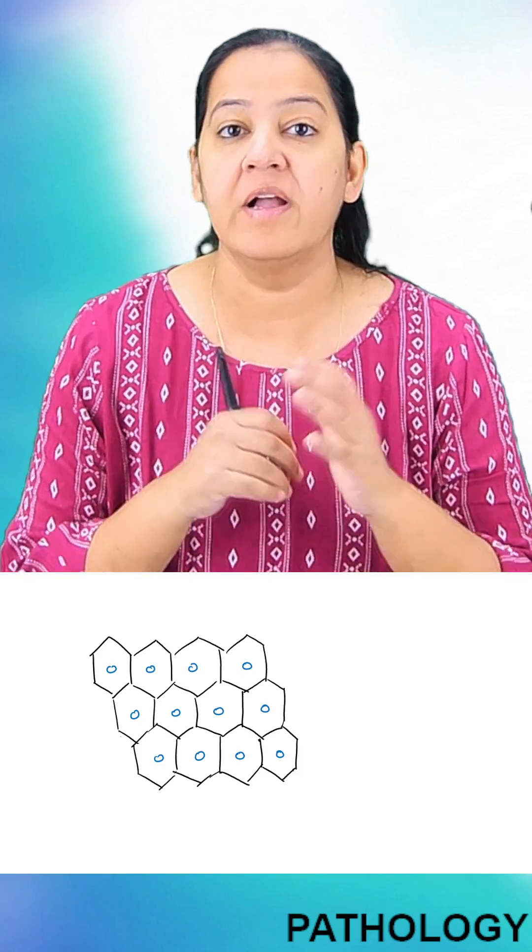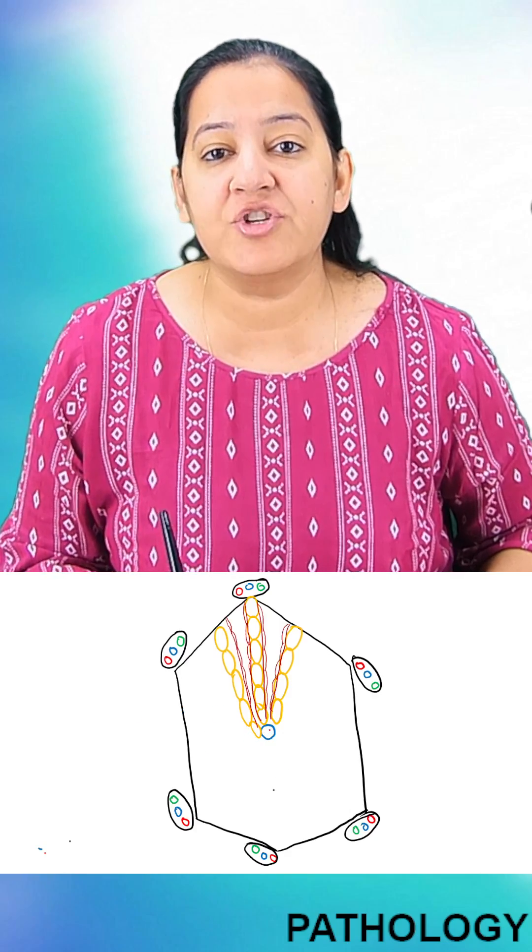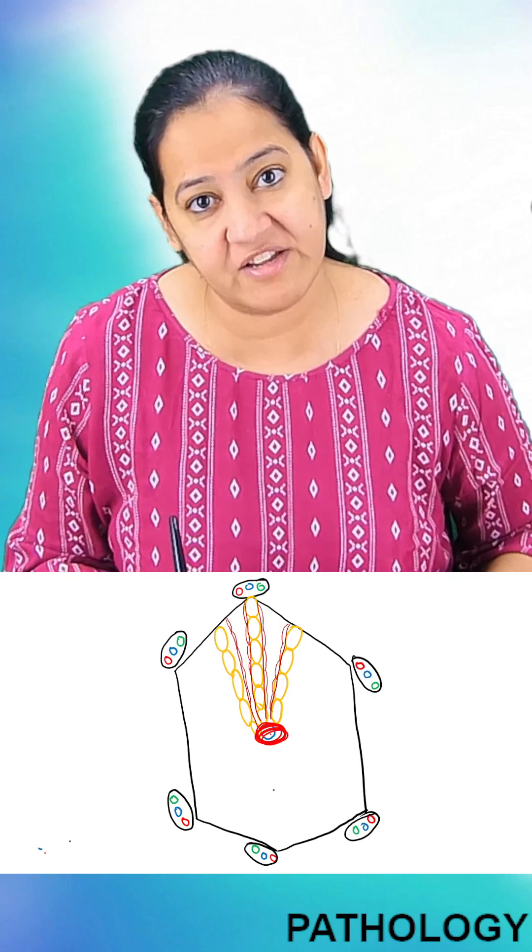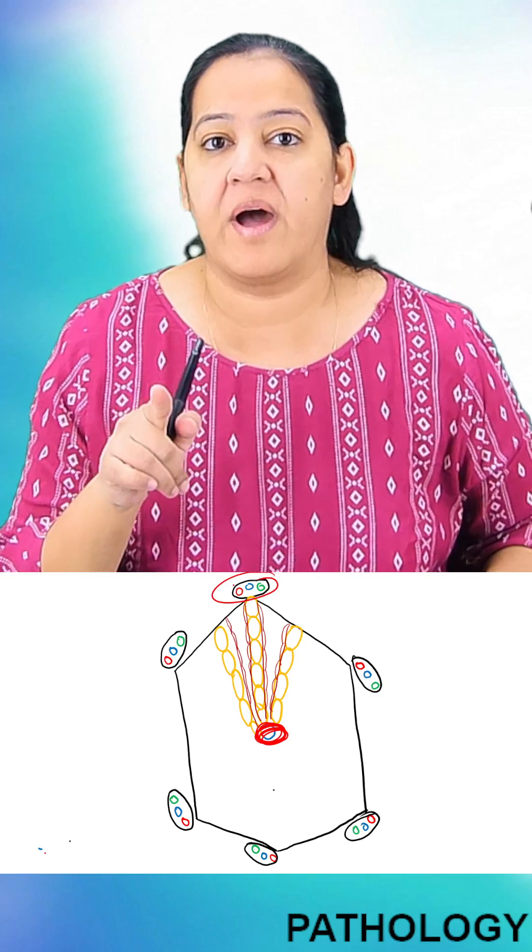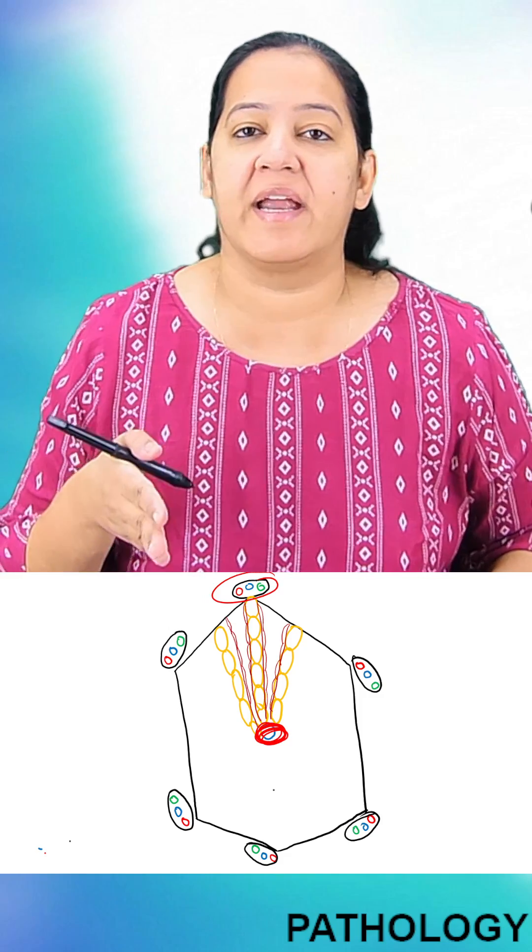Here you can see the multiple lobules of the liver. At the center of each lobule, there is a central vein or hepatic vein. And at the periphery, there are portal triads. There is cord of hepatocytes connecting them.